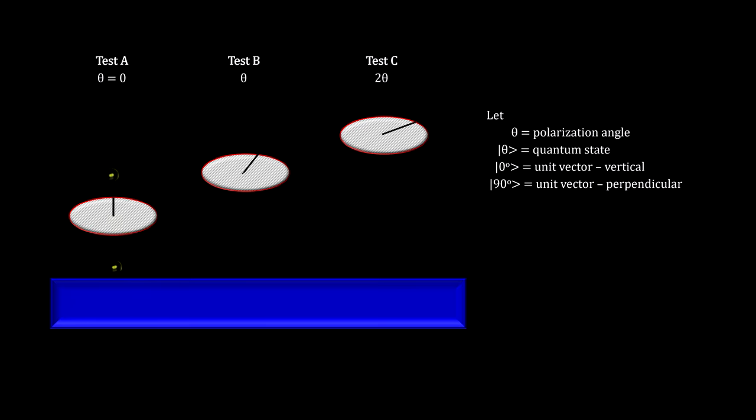Here we have three tests, A, B, and C. Test A sends vertically polarized photons into a vertically polarized filter. Test B sends vertically polarized photons into a filter polarized at an angle theta. And test C sends vertically polarized photons into a filter polarized at an angle 2 theta.